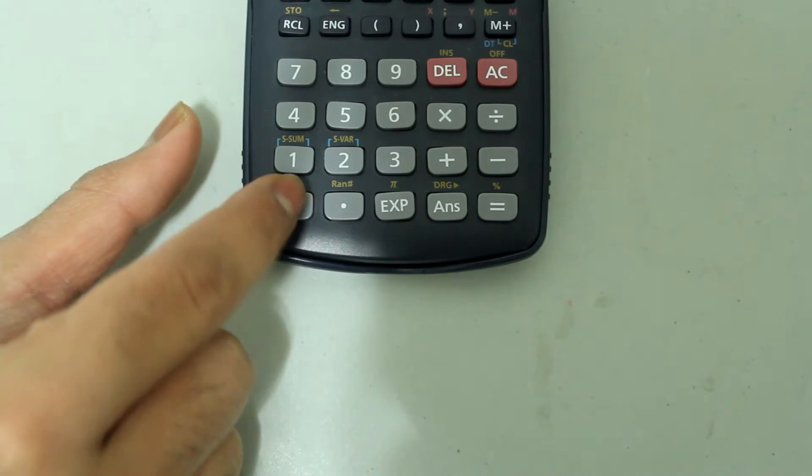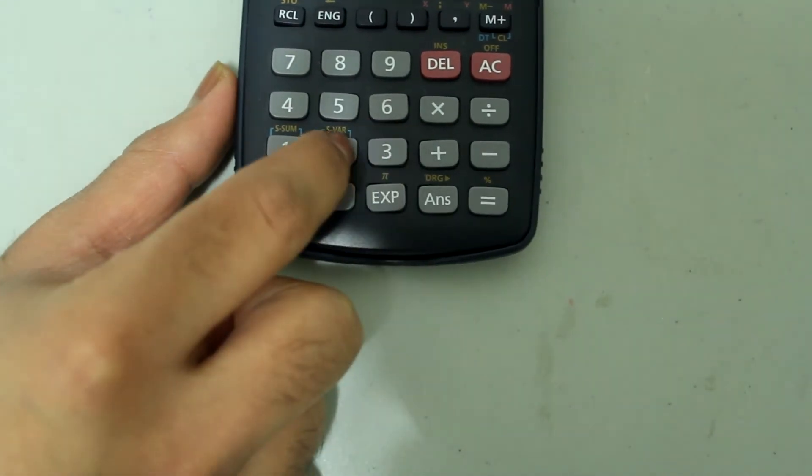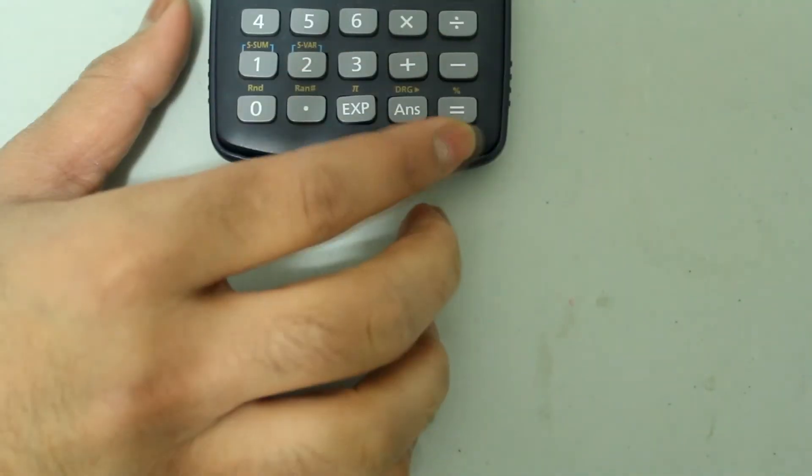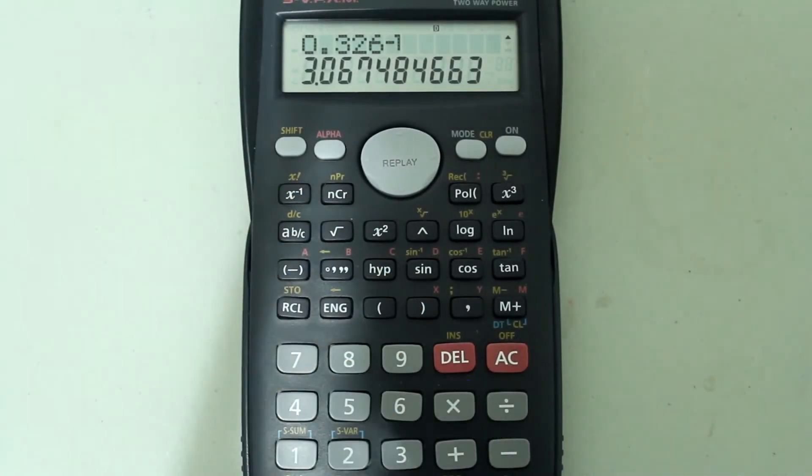So, clear this out. Let's type in 0.326. And once again, press this button and hit equals. We get the reciprocal of that number.